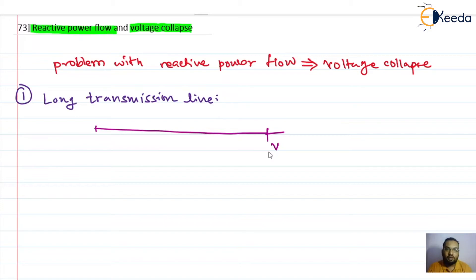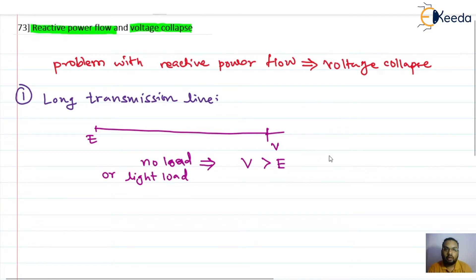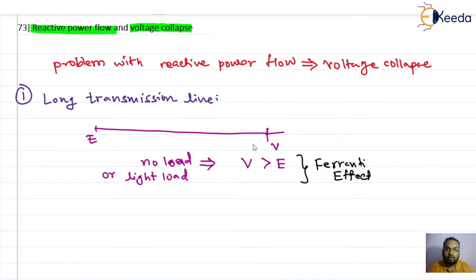This problem is different for different loading conditions. Under no load condition, the receiving end voltage becomes greater than the sending end voltage for the long transmission line. This situation can also occur under light load condition, and this phenomenon is popularly known as the Ferranti effect. The better way is to provide compensation for the transmission line to avoid this Ferranti effect.